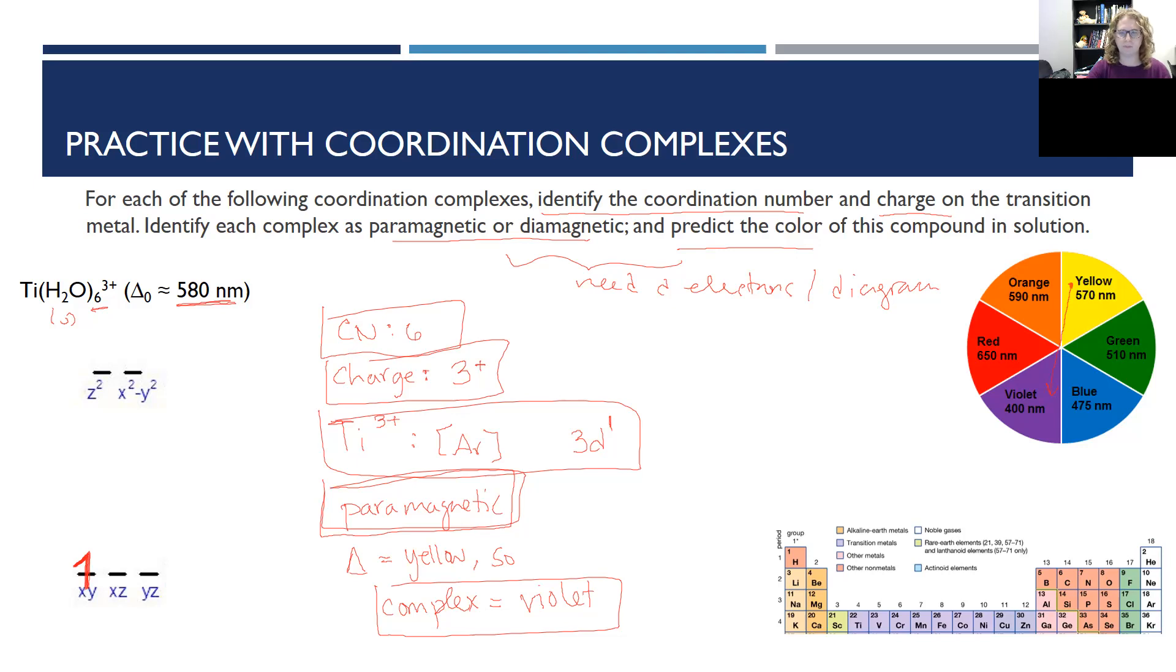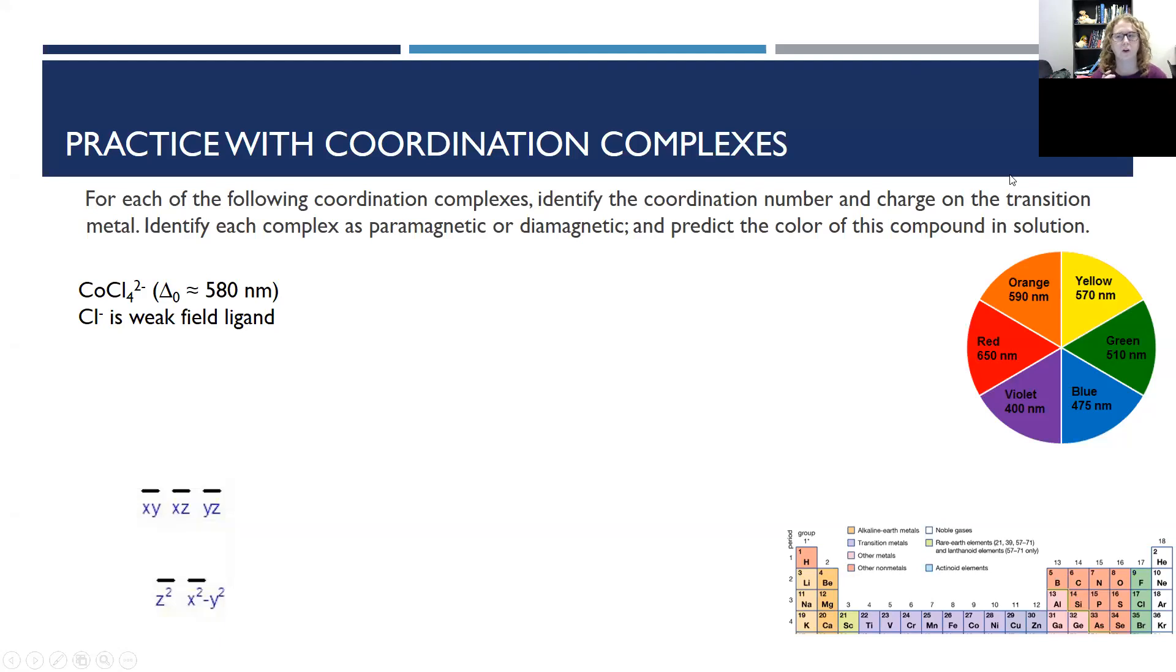Let's try another. All right, let's take a look at this cobalt complex, and this time you need a little more information because you're going to have more electrons. Chloride is a weak field ligand. Give it a try.